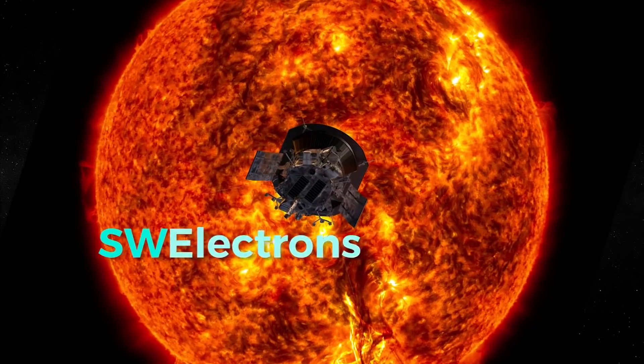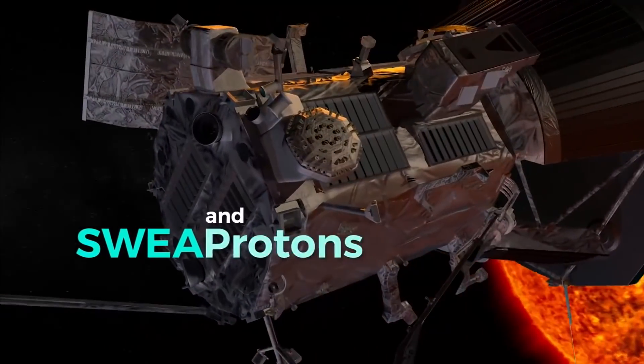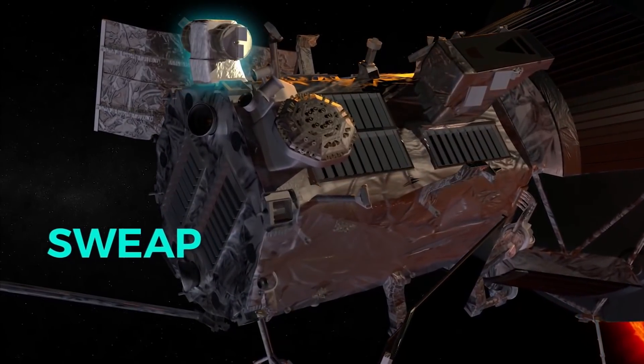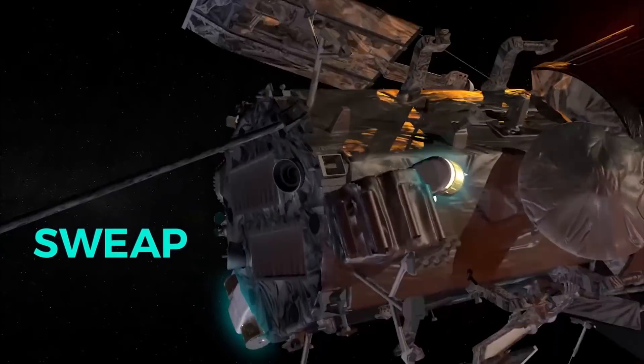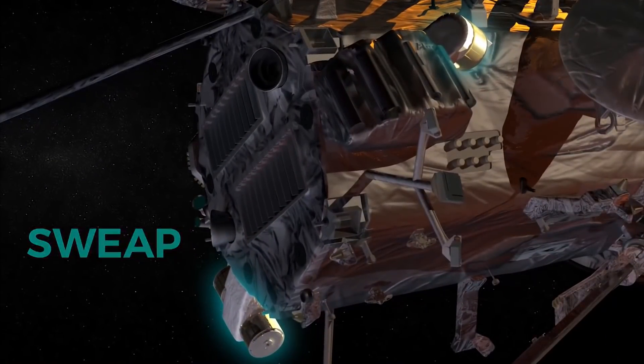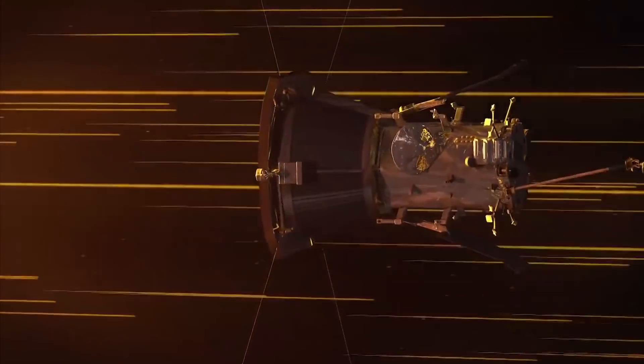Another instrument that's really important for in situ measurements is SWEAP, the solar wind electrons, atoms and protons. This is a Faraday cup and other instruments that essentially capture the atoms and measure their velocity and their distribution. So it's just basically sampling the quality or the material that makes up the solar wind.